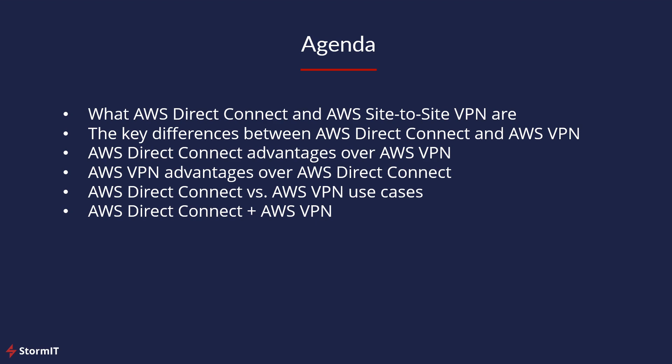First, we will look at AWS Direct Connect and AWS Site-to-Site VPN — what they do, what they are. Then we will take a look at key differences between them, then at Direct Connect advantages over AWS VPN, but also VPN advantages over AWS Direct Connect. And then we will do a comparison between them — whether it's better to use Direct Connect or AWS VPN — but also look at the use cases, and how to use both of them to achieve what you need.